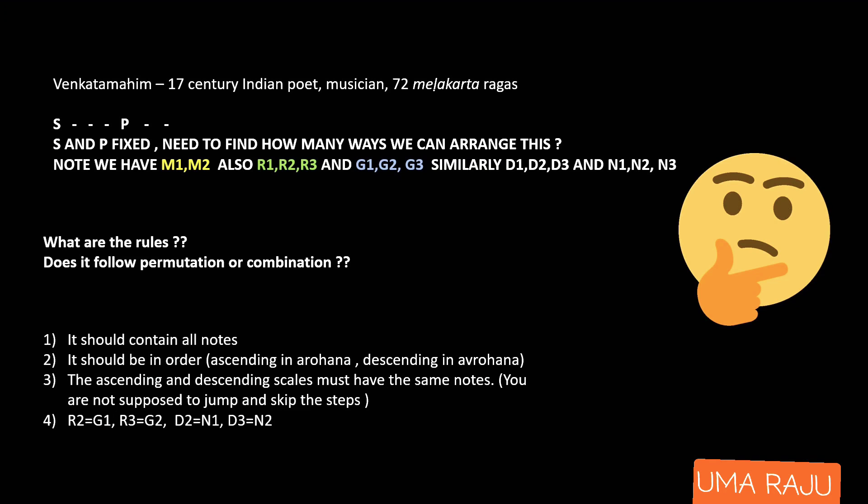An important rule: Ri2 and Ga1 are the same tone, and Ri3 and Ga2 are the same tone. Similarly, Dha2 and Ni1 are the same, and Dha3 and Ni2 are the same. You might wonder why we have both if they are the same — but if I explain that I'll be going too far into music theory, so let's focus only on the math part.